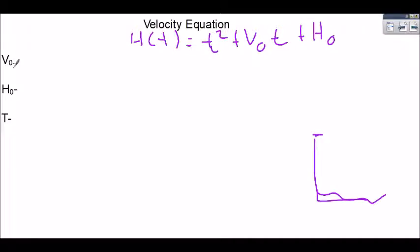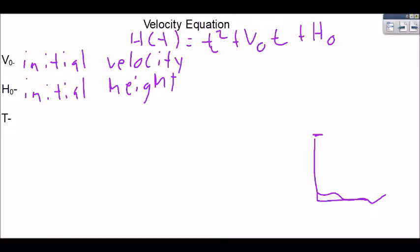That means our velocity or how fast we're going initially. When we first jump off this diving board, how fast are we going when we get off that diving board? h sub 0 is our initial height. So when we're at this diving board, how far off the ground are we? And t stands for time.